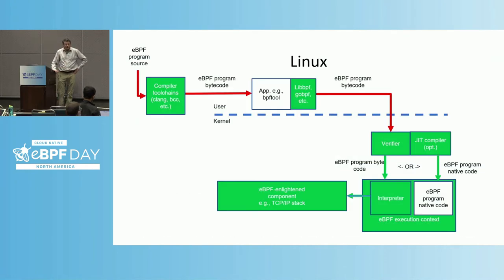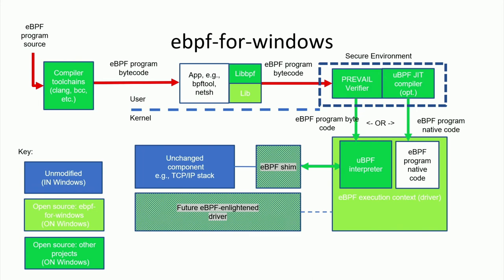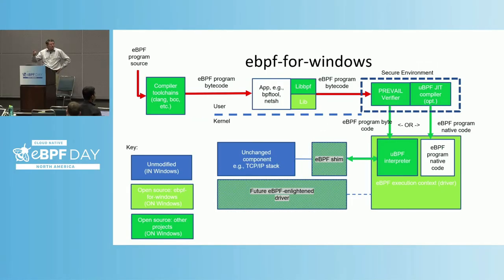This is the classic assembly in Linux, where your compiler toolchains and loader libraries are all in user space, but the verifier, JIT compiler, assembler, and execution context are all in kernel. That's the classic one eBPF has had for years. But that doesn't mean other systems have exactly that same assembly. Here's the one we have in eBPF for Windows, and it illustrates that there are many ways to assemble the same building blocks.